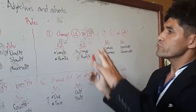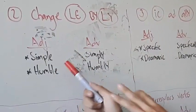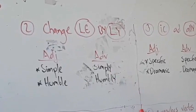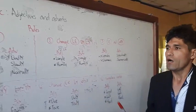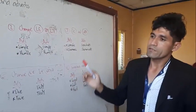The second rule that we have is we need to change the ending -le to -ly. The adjective 'simple' changes to 'simply.' 'Humble' becomes 'humbly.' You need to pay attention to the rules because you are going to use them when you need to change adjectives into adverbs.